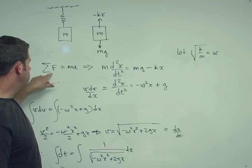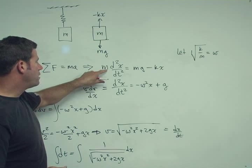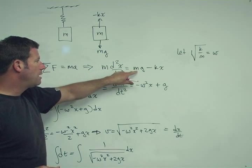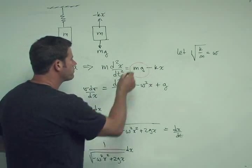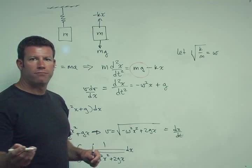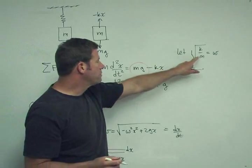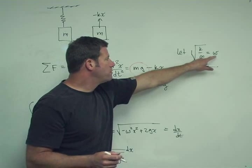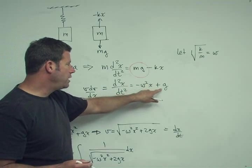So the same process, we take the sum of the forces equals ma, Newton's second law. We get this differential equation: md squared x dt squared equals mg minus kx. So we have a new term here, the mg term, which did not exist in our previous formulation. Now if I go through and take the same process, I let squared of k over m equal w, rewrite this as d squared x dt squared equals minus w squared x plus g.